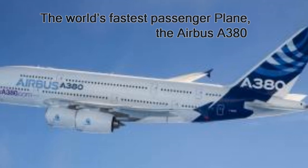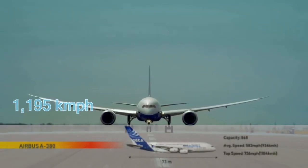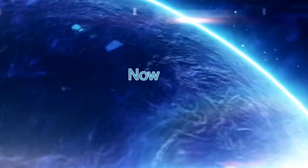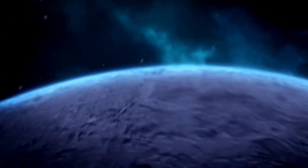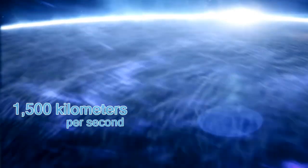The world's fastest passenger plane, the Airbus A380, travels at 1,185 kilometres per hour. Now, compare that with neutron stars, that complete 43,000 revolutions per minute or 1,500 kilometres per second.